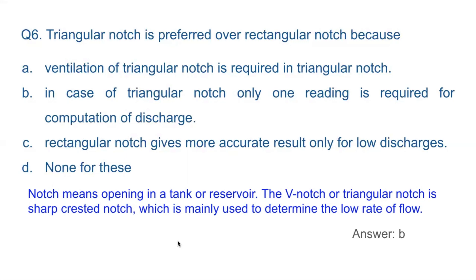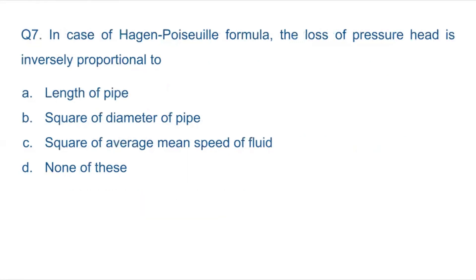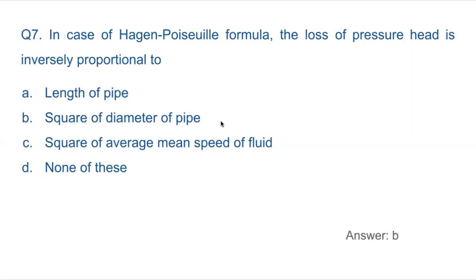Question 7: In case of the Hagen-Poiseuille formula, the loss of pressure head is inversely proportional to — A: length of pipe, B: square of diameter of pipe, C: square of average mean speed of fluid. If you increase the diameter of the pipe, the pressure will decrease. So the loss of pressure head is inversely proportional to the square of the diameter of the pipe. Answer: B.